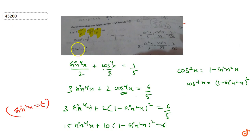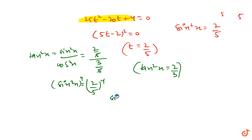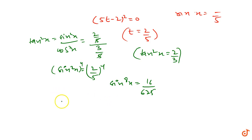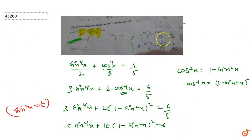So the first option is correct: tan²x = 2/3. Now let's verify the next option. Since sin²x = 2/5, raising both sides to the power 4 gives sin⁸x = (2/5)⁴ = 16/625. And cos²x = 3/5, so raising to power 4 gives cos⁸x = (3/5)⁴ = 81/625.